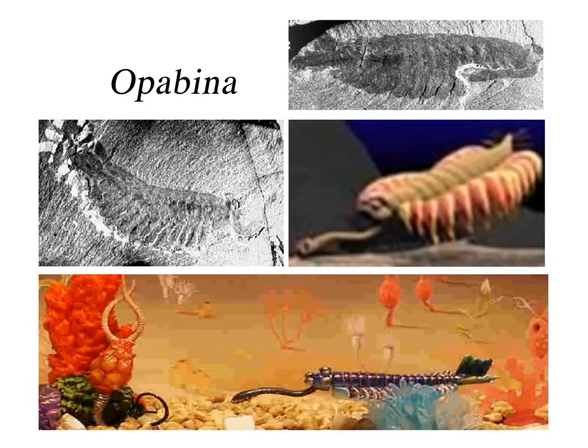Among the critters that existed at that time, one is called Opabinia. These guys had a long proboscis that would allow them to scrape along the seafloor and find food. They had some feather-like appendages that helped them swim. Remember, everything's still in the ocean at this point in time. They were definitely interesting-looking little critters.